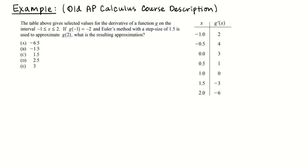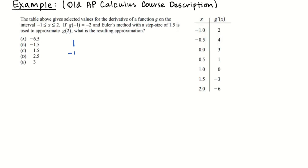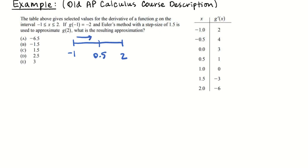So we're saying g(−1) equals −2. Euler's method with a step size of 1.5 is used to approximate g(2). So I'm going from negative 1 to positive 2, jumping 1.5 each time. That'll be going from negative 1 to positive 0.5, and then from 0.5 to 2. So that's my two steps, and a lot of the information in this table is going to be irrelevant.